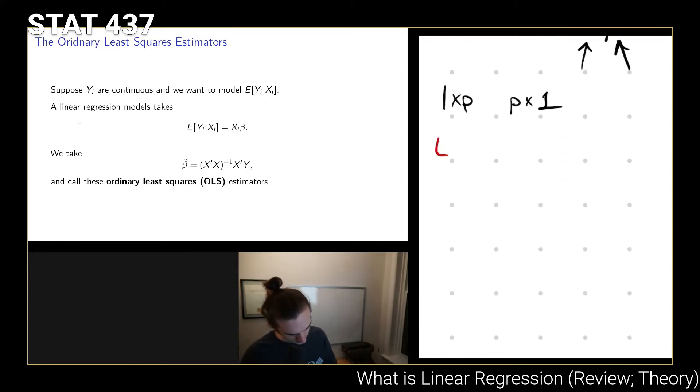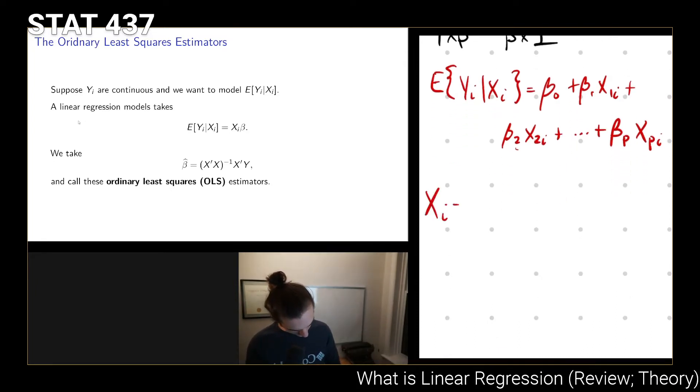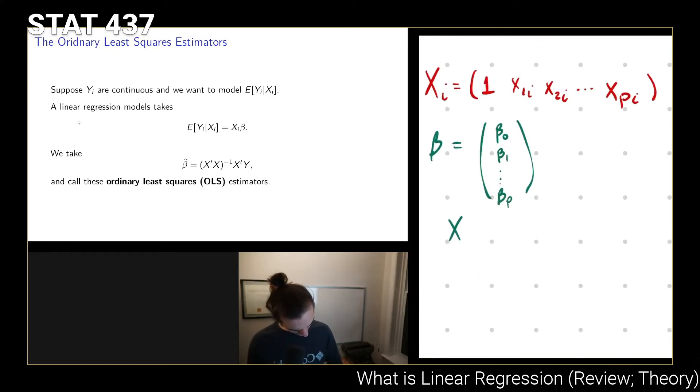But you might actually see this written as E[Yi|Xi] = beta0 + beta1*x1i + beta2*x2i + ... + betap*xpi. And if we then take Xi equal to (1, x1i, x2i, ..., xpi) and beta = (beta0, beta1, ..., betap), then Xi*beta gives us the same linear relationship. So when we're talking about this linear form of the mean, that's really what we are talking about there.